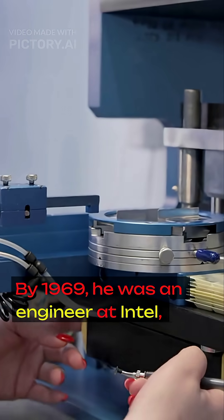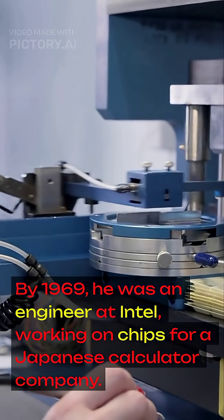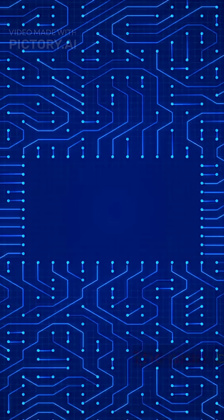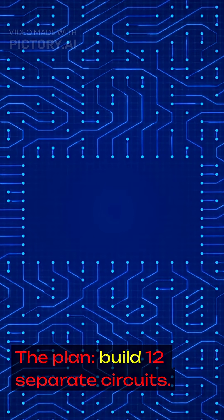By 1969, he was an engineer at Intel, working on chips for a Japanese calculator company. The plan, build 12 separate circuits.